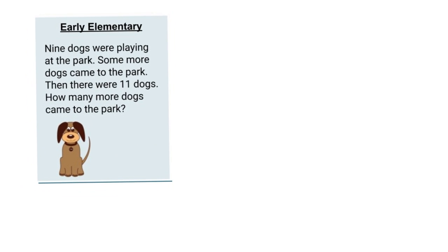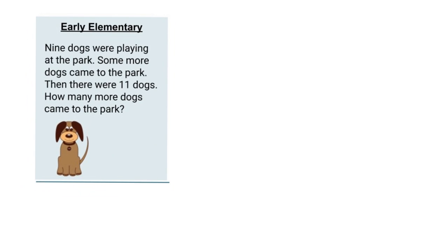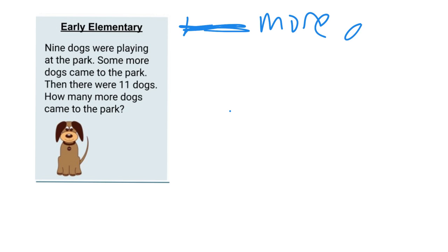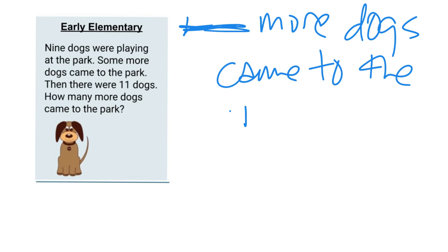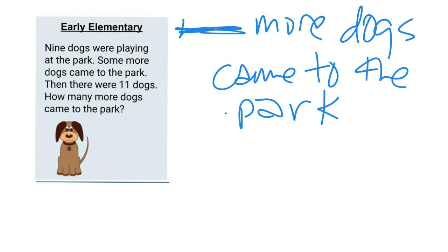We're going to start with our early elementary problem. Nine dogs were playing at the park. Some more dogs came to the park, and then there were 11 dogs. How many more dogs came to the park? The idea is we want to start with an answer sentence — that is so important. We're going to leave a blank: blank more dogs came to the park.